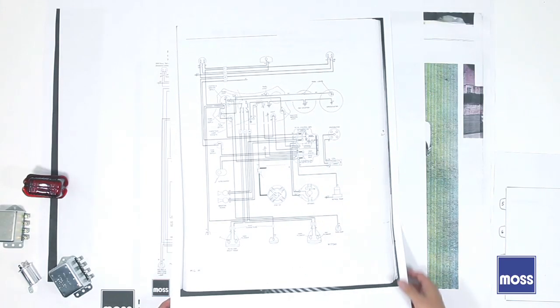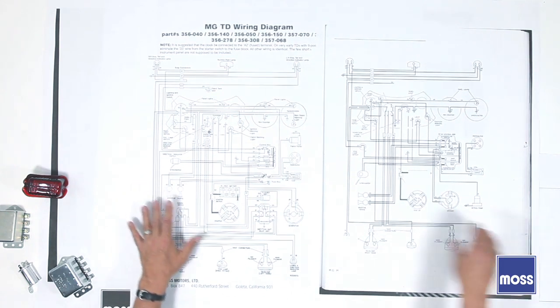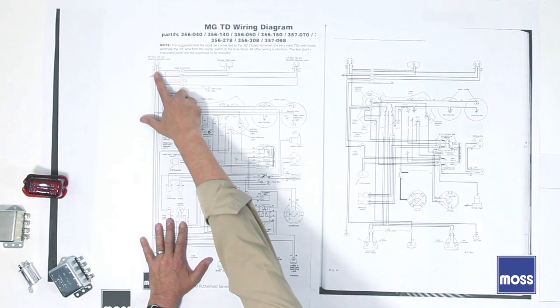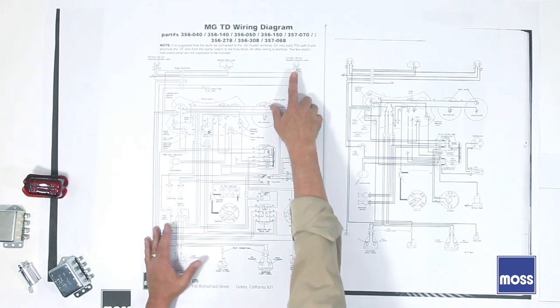Now this next diagram is very similar. It's the same car with a slight modification. You see again in the back, brake light, running light, brake light, running light. That part of the car didn't change. So they didn't have to reconfigure anything back there.